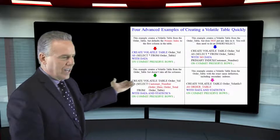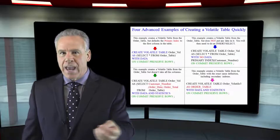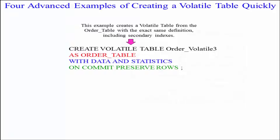The last example is really important — this is the key difference between what you've seen in the past and what you're going to see right now. Create volatile table order_volatile_3 as order_table — not as select everything from order_table, but as order_table directly. That means you pull from the original table with the exact same table structure: primary index, secondary indexes, any referential constraints, referential integrity. Everything in those table structures will be exactly alike.